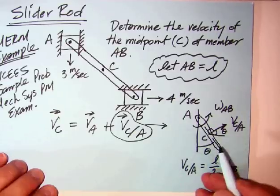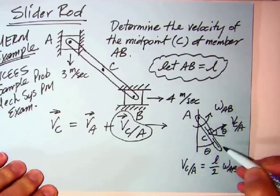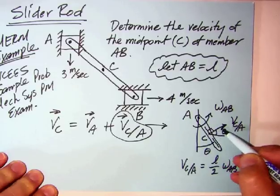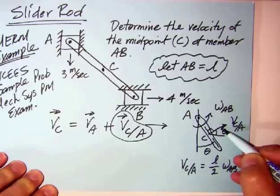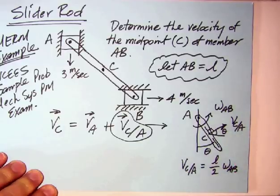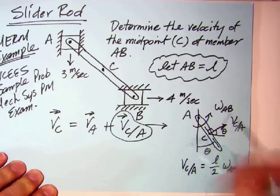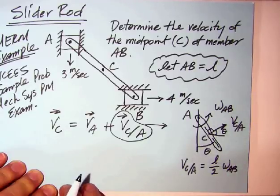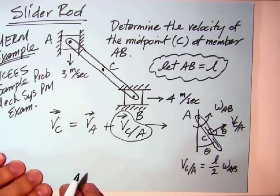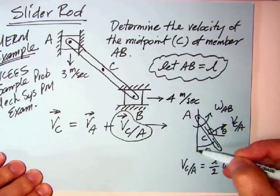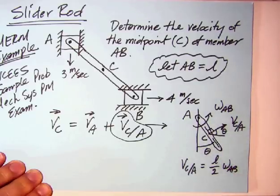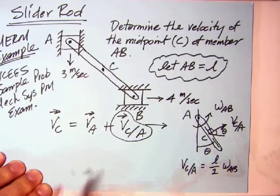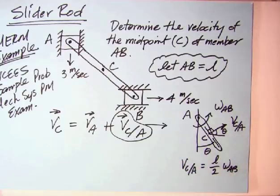I like to kind of draw a little picture to go with that. Here's our member, kind of a little bit shorter, but point C is here, and the velocity of C relative to A, as if A is fixed, so that moves in a circle, so it's perpendicular to that. It is going to be R omega, in this case L over 2 omega AB. I've shown it in the counterclockwise direction. If it comes out negative, it was the other way. At this particular angle theta, we can break up V sub CA into components, cosine theta and sine theta.